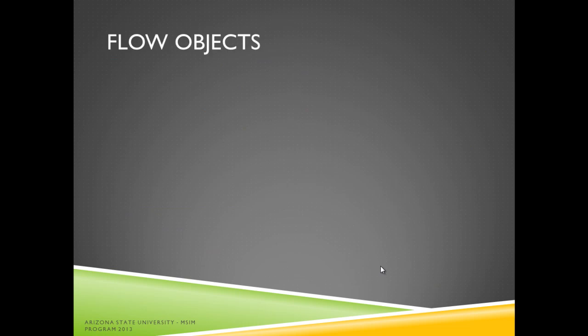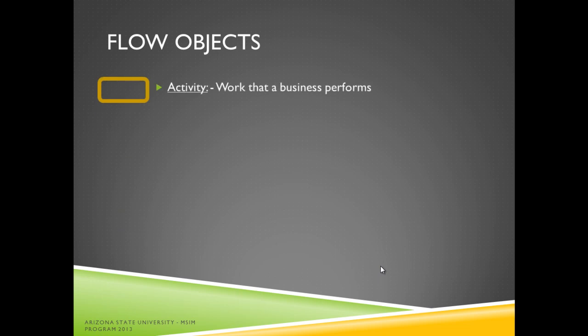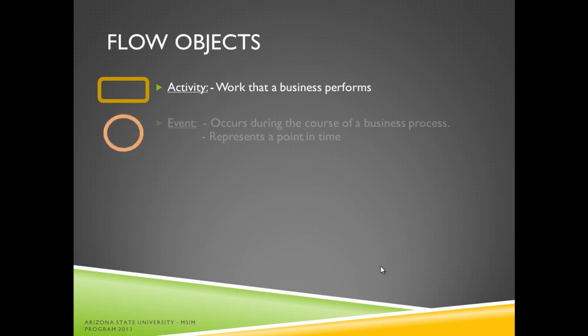Let's define the symbols located under flow objects. A rounded rectangle is an activity, representing work that a business performs. A circle is an event, which occurs during the course of a business process. It can also represent a point in time.